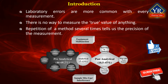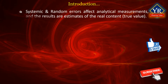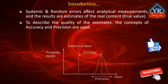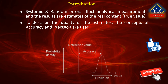Repetition of one method of measurement several times tells us the precision, that is the reproducibility of the measurement. If the results of measuring the same quantity by different methods agree with one another, then we become confident that the results are accurate, which means they are near the true value. Systematic and random errors affect analytical measurements, and the analytical results are basically estimates of the real content, that is the true value. To describe the quality of the estimates in analytical measurements, the concepts of accuracy and precision are used.